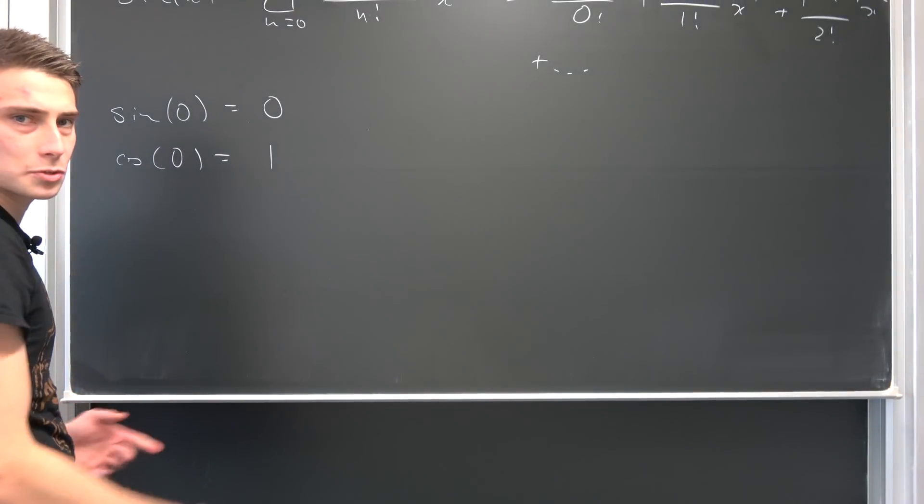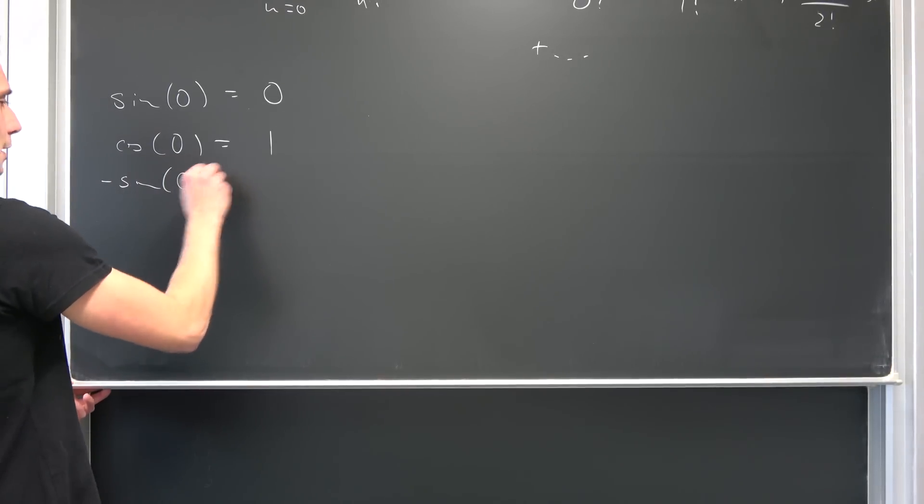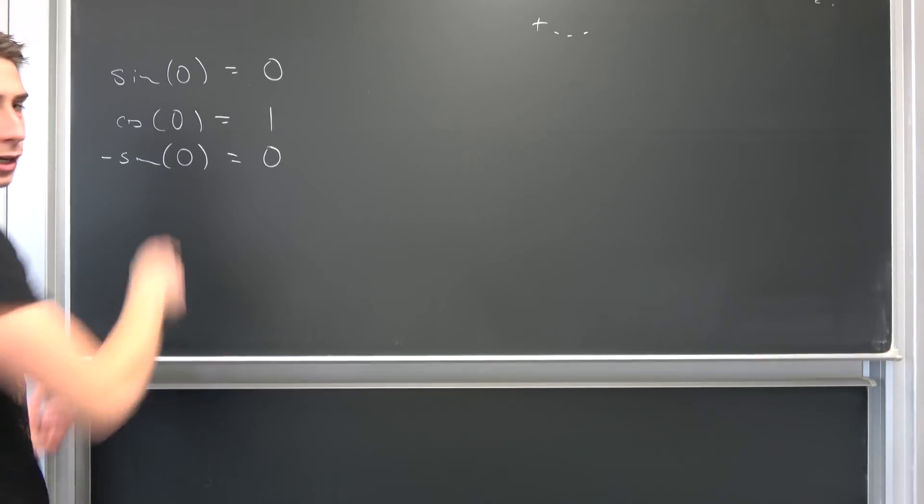Then the derivative of the cosine is the second derivative of the sine, which is nothing but negative sine at the point zero. It's just zero. Let's move on.